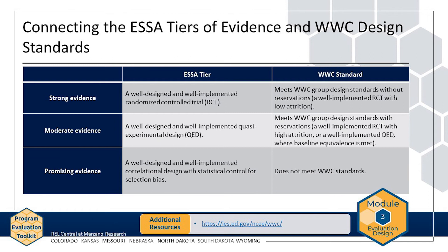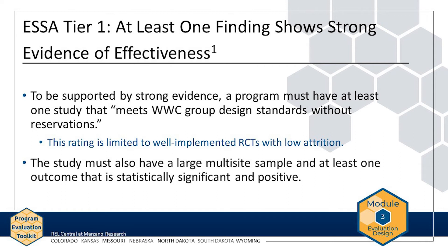Now let's discuss each level individually. To be supported by strong evidence, a program must have at least one study that meets WWC group design standards without reservations. This rating is limited to well-implemented randomized controlled trials, or RCTs, with low attrition — the number of participants who leave a study before it is completed. In addition, the study must have a large, multi-site sample.